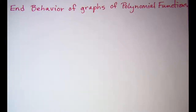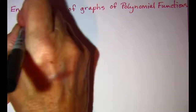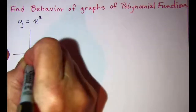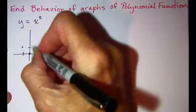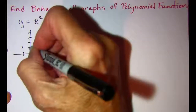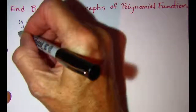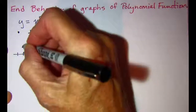In this video we'll examine the end behavior of graphs of polynomial functions. When we were talking about our basic graphs, we saw that y equals x squared looks like a parabola. When x is 2, y is 4, and when x is negative 2, y is 4. So our parabola looks like this.